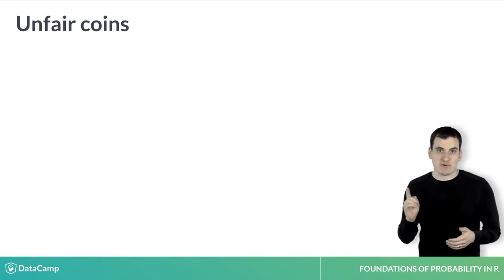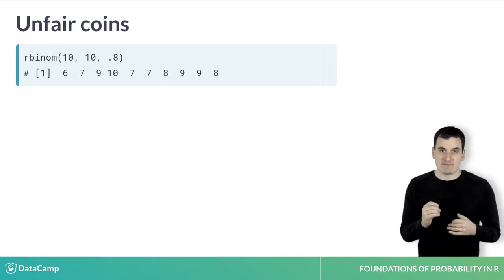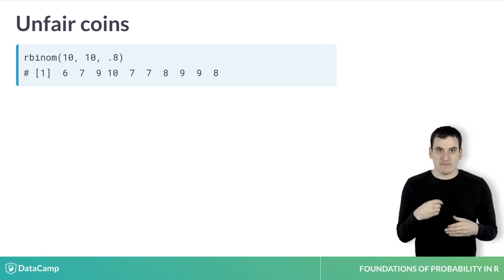When the third parameter is 0.8, that means each flip has an 80% chance of resulting in heads. When we flip one of these unfair coins 10 times, we notice the number of heads tends to be around 7 to 9.